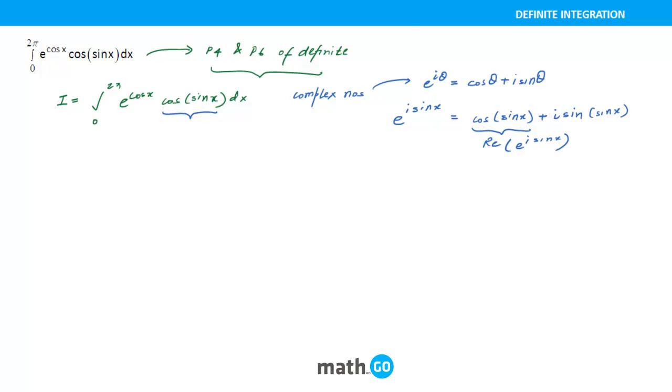So that means this complete integral then reduces to ∫₀²π e^(cos x) Re(e^(i sin x)) dx. So this is how complex numbers can also be introduced in a definite integration problem. And what about this particular term that is written ahead? So this is nothing but a constant. Can you see that it's a constant? So the constant can be multiplied inside.